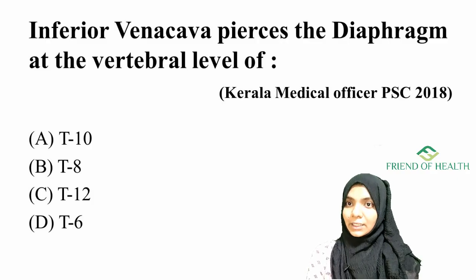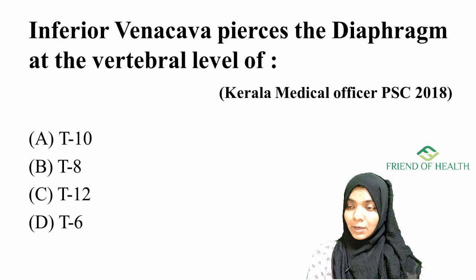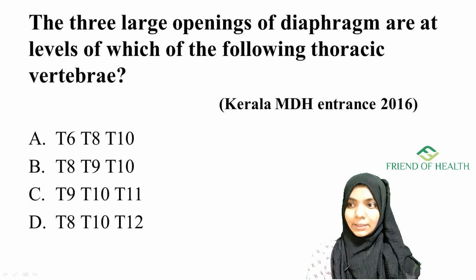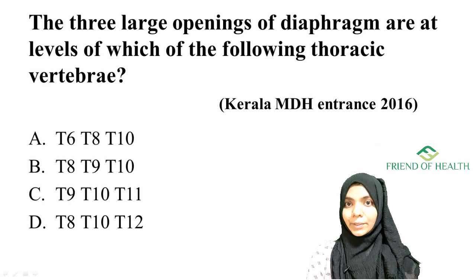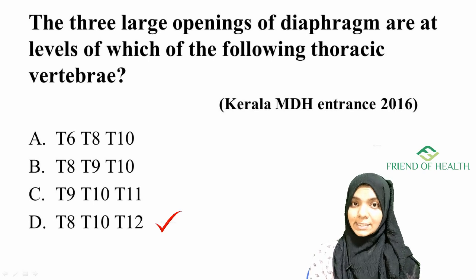Moving back to the questions: the first question — the inferior vena cava passes through the diaphragm at the vertebral level of — using 'Voice of America,' V is for vena cava at T8, so the answer is T8. For the second question — the three large openings of the diaphragm are at which thoracic vertebral levels — the answer is T8, T10, and T12.